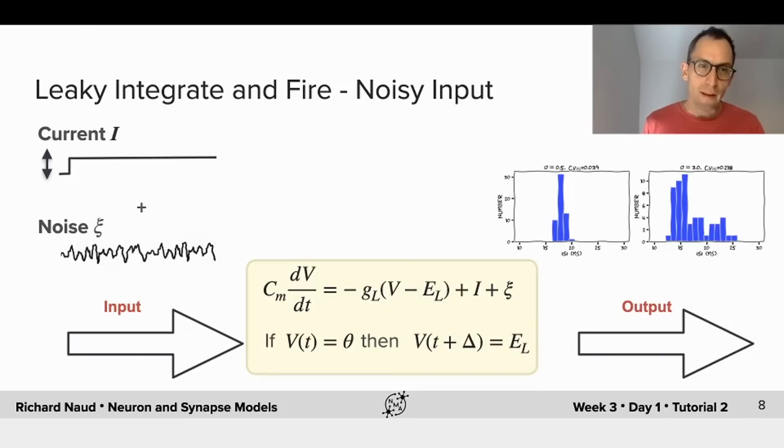So I've shown you that a constant current combined with a background noise can be understood in terms of the average inter-spike interval in response to that input. But that's not the whole story.